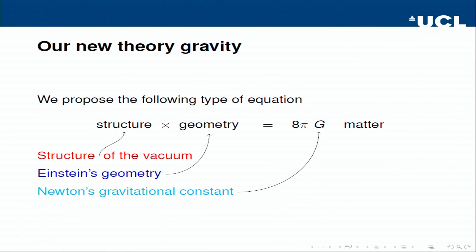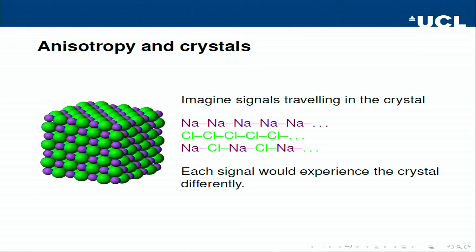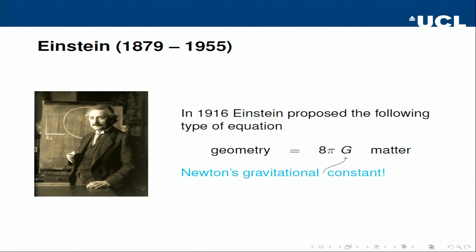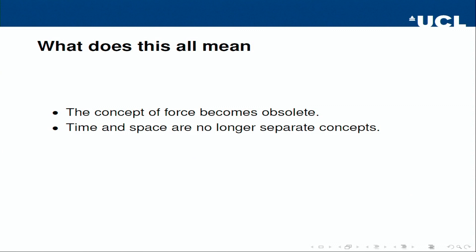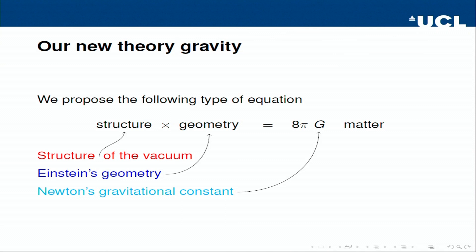Here is the one hard part of this talk. The equation looks roughly like: you have a structure, multiply it by geometry, and get something that acts as matter. One mathematical fact: if you have a number and multiply it by one, you get the number back. So if you replace the structure by one, you get one times geometry, which is just Einstein's equation. Our model contains Einstein's model as a special case when the structure is trivial — multiplied by one, meaning no structure.